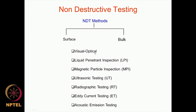We have discussed the first one — visual optical — in the last lecture. If you want to inspect what lies beneath, you need to use one of the other NDT methods listed here. Some of these fall under the category of surface methods, and some fall under bulk or volume methods. Techniques like liquid penetrant inspection, magnetic particle inspection, and eddy current testing come under surface methods, while ultrasonic testing and radiographic testing fall under the bulk category. Ultrasonic testing can do both surface and bulk inspection.